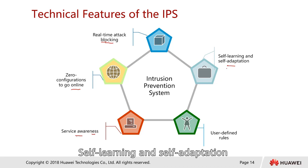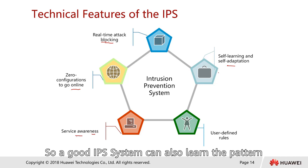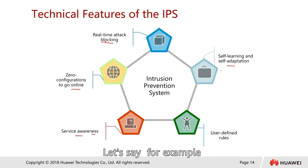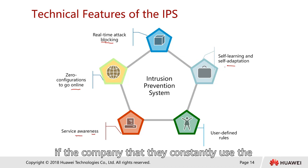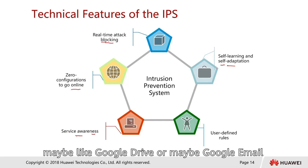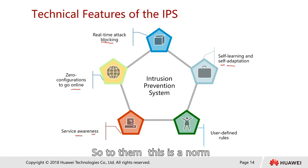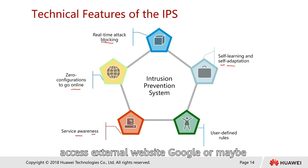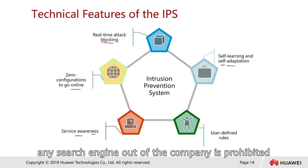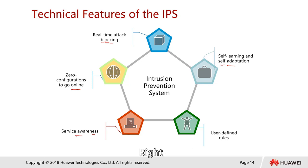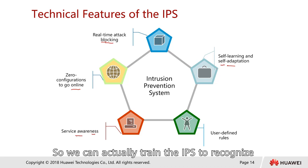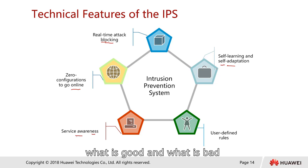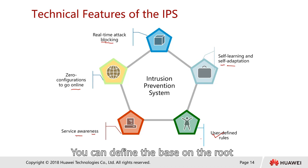Self-learning and self-adaptation is another key feature. A good IPS system can learn the pattern of user behavior. For example, a company that constantly uses Google Drive or Gmail considers that normal traffic, while another company may prohibit accessing external websites or search engines. We can train the IPS to recognize what is good and what is bad, and we can also define rules accordingly.